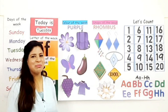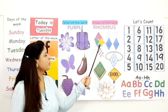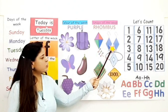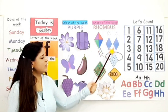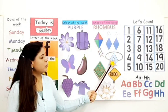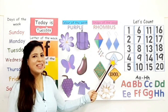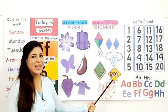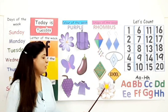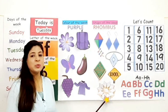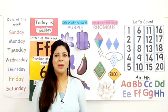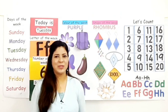Now say along with me: rhombus shape kite, rhombus shape earrings, rhombus shape ring head, rhombus shape Christmas cookie, rhombus shape sign boat, rhombus shape sweet. Good job. Now let's count 1 to 20.